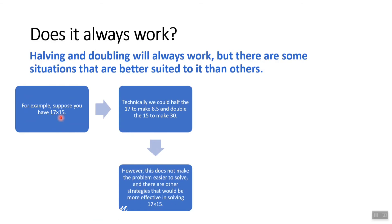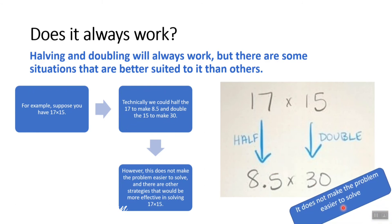Consider 17 times 15. Technically, we could halve 17 to make 8.5 and double 15 to make 30. However, it's not easy to multiply 8.5 with 30, so this doesn't make the problem easier to solve.